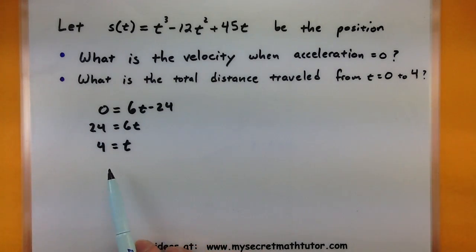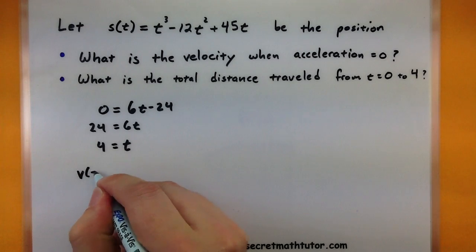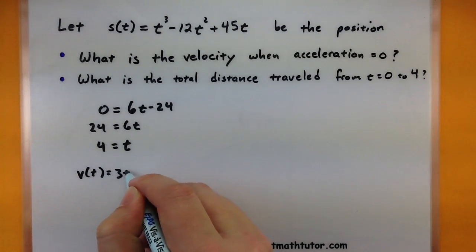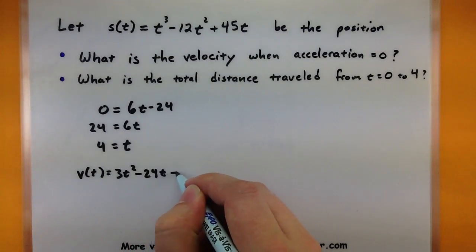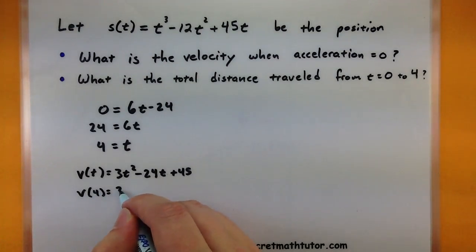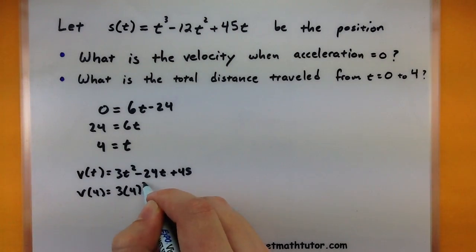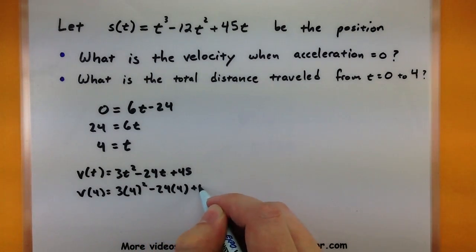Now careful on what this actually means here. This says after 4 seconds, I know that my acceleration is zero. But if I really want to know the velocity, now I have to substitute this into our velocity function. Let's give that a try. So our velocity was the 3t² - 24t + 45. Now let's go ahead and put a 4 in there.